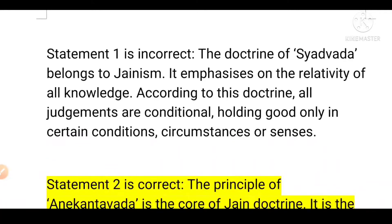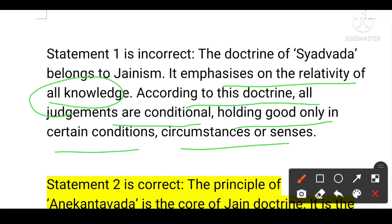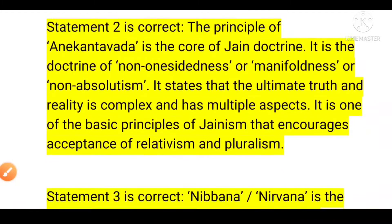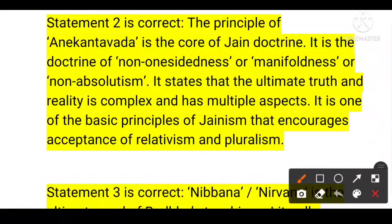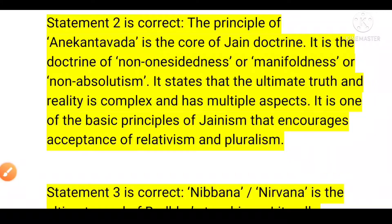Statement one is incorrect — the doctrine of Syadavada belongs to Jainism, not Buddhism. It emphasizes the relativity of all knowledge. According to this doctrine, all judgments are conditional, holding good only in certain conditions, circumstances, or senses. Statement two is correct — the principle of Anekantavada is the core of the Jain doctrine. It is the doctrine of non-one-sidedness or non-absolutism. It says that ultimate truth and reality is complex and has multiple aspects, and is the basic principle of Jainism that promotes acceptance of relativism and pluralism.